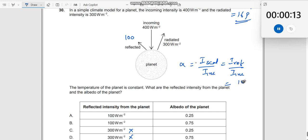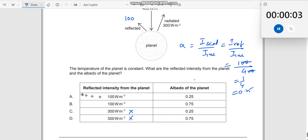What is reflected intensity? 100. Substitute. And I incident. What is incident? 400. So, the zeros cancel. You get 1 by 4, which is equal to 0.25, which is the right answer. Option A.